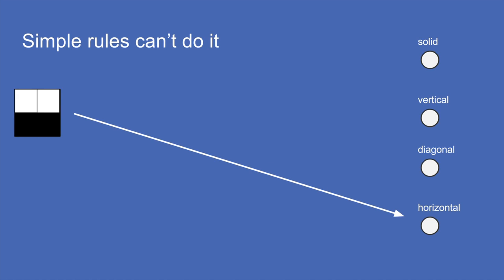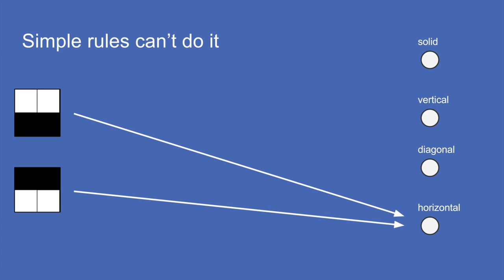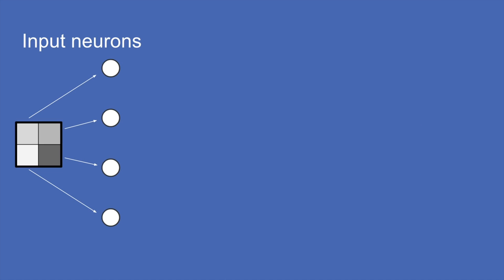This is tricky because you can't do this with simple rules about the brightness of the pixels. Both of these are horizontal lines, but if you tried to make a rule about which pixel was bright and which was dark, you wouldn't be able to do it. So to do this with a neural network, you start by taking all of your inputs.